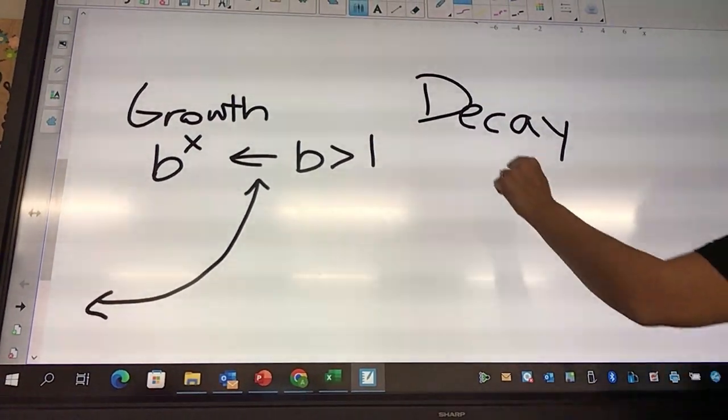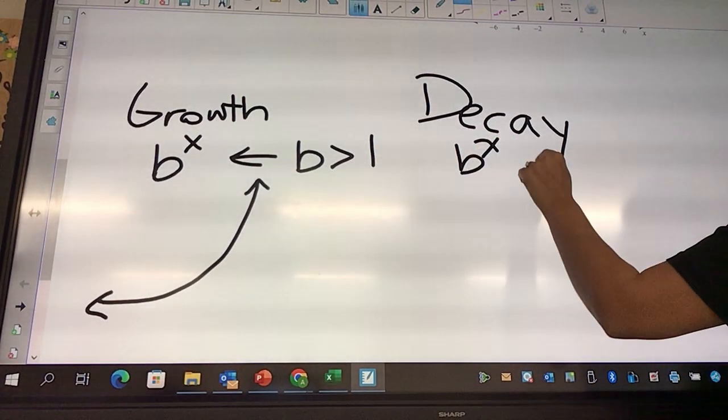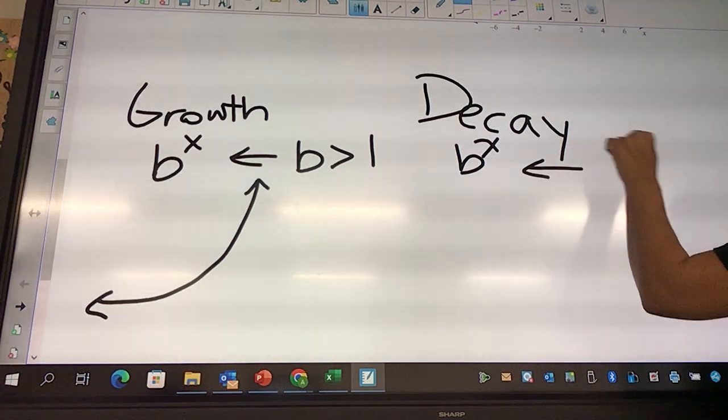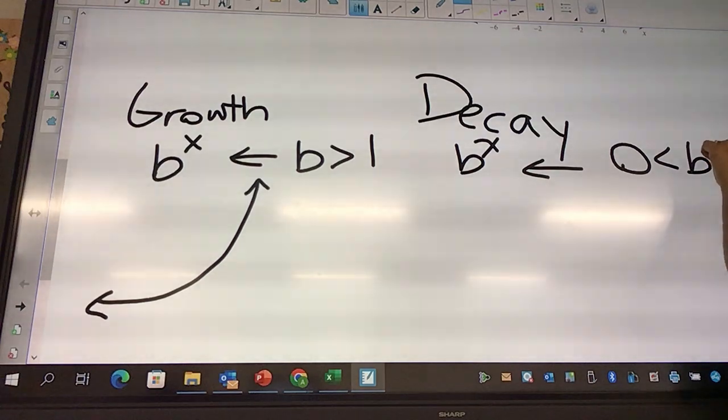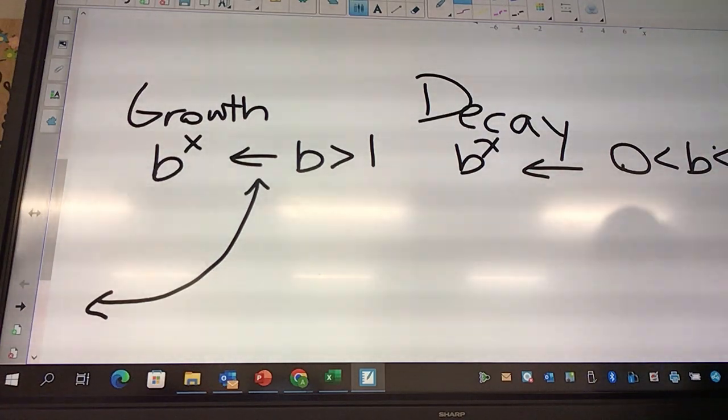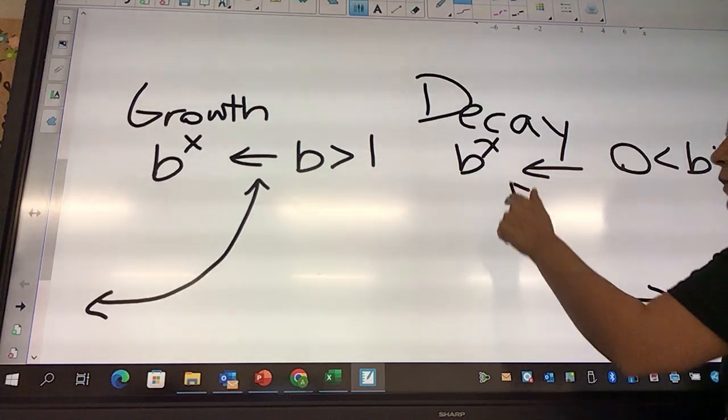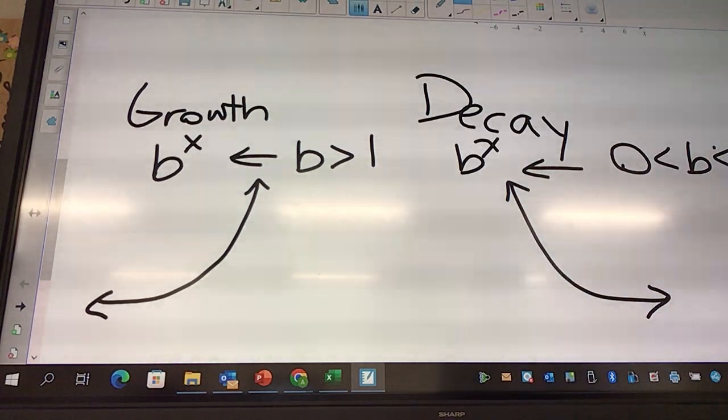Decay is looking like B to the X, where B is between 0 and 1. So it's got to be greater than 0 but less than 1. And then obviously it's going to look like this - it's going down, decaying over time.